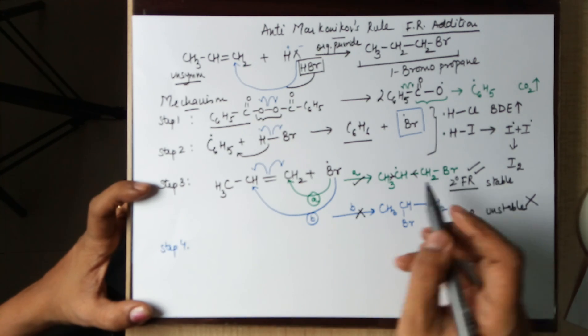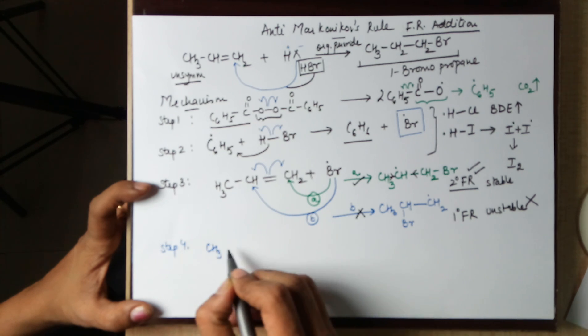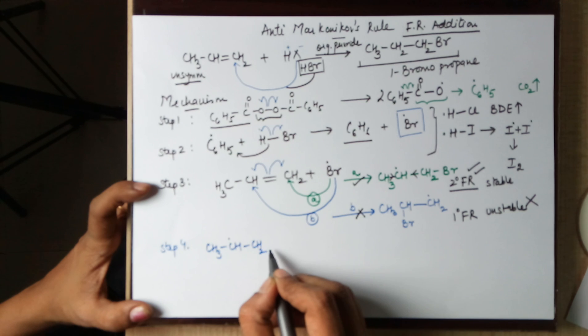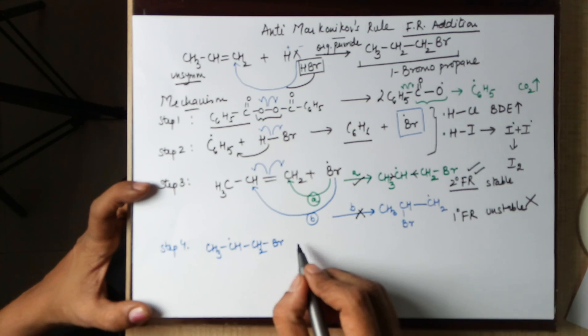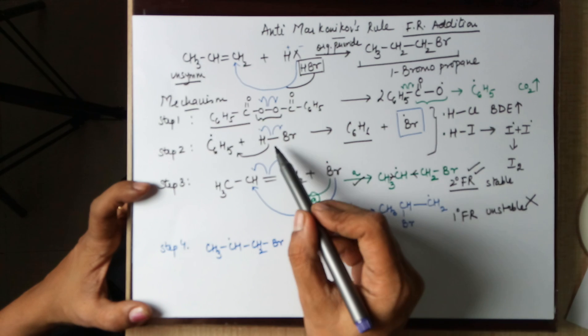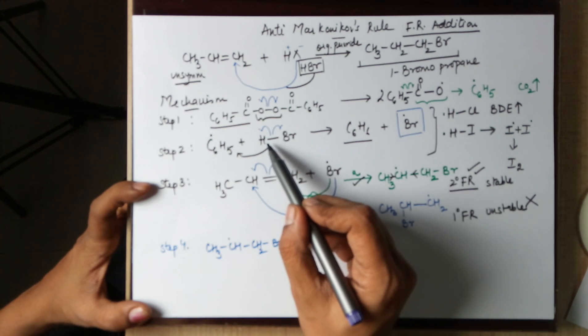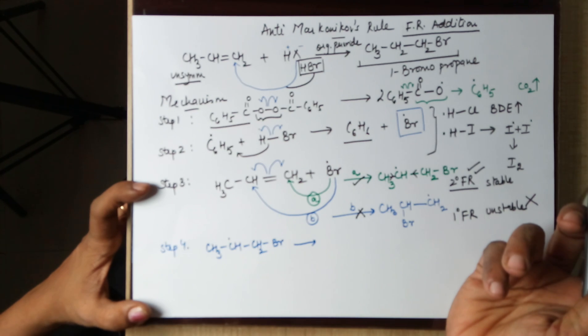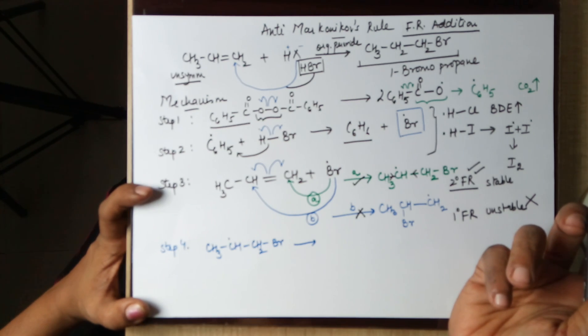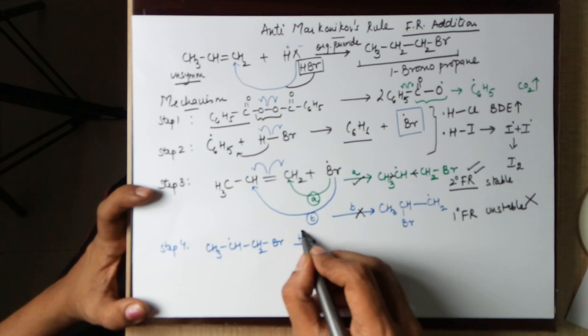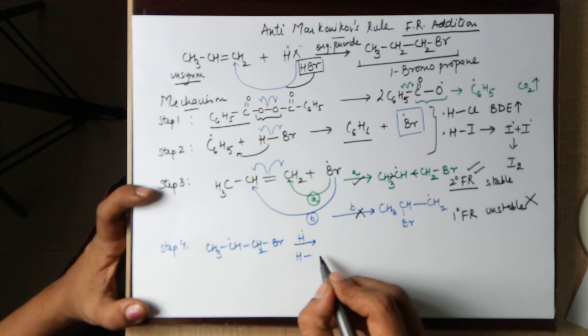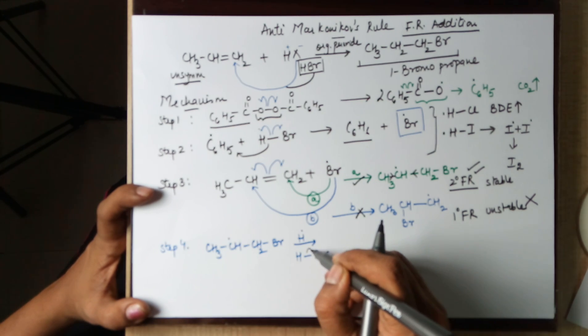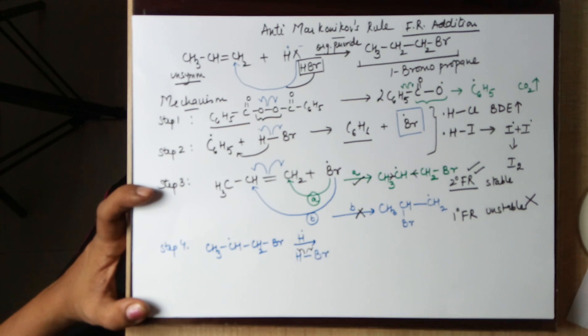Step 4, the end product of step 3 was this, which will now combine with the H dot left from here. In this case, we had an HBr formed, Br dot form. Another molecule of an HBr can lead to the formation of an H dot. This H dot, the free radical, is coming from another molecule of HBr, which is undergoing homolytic cleavage.